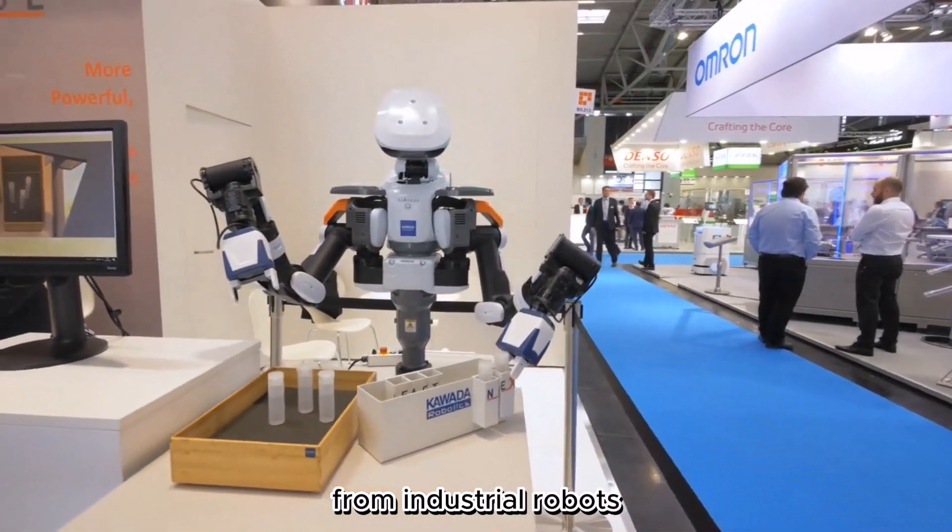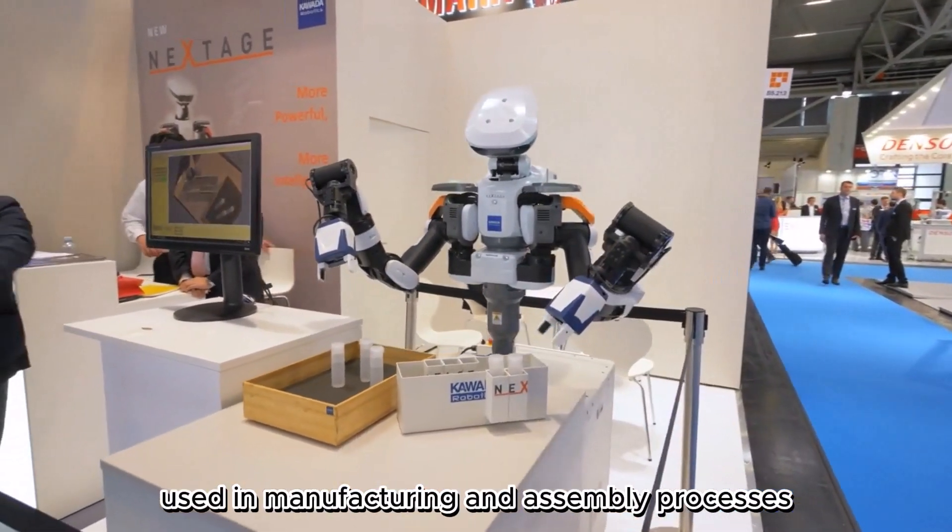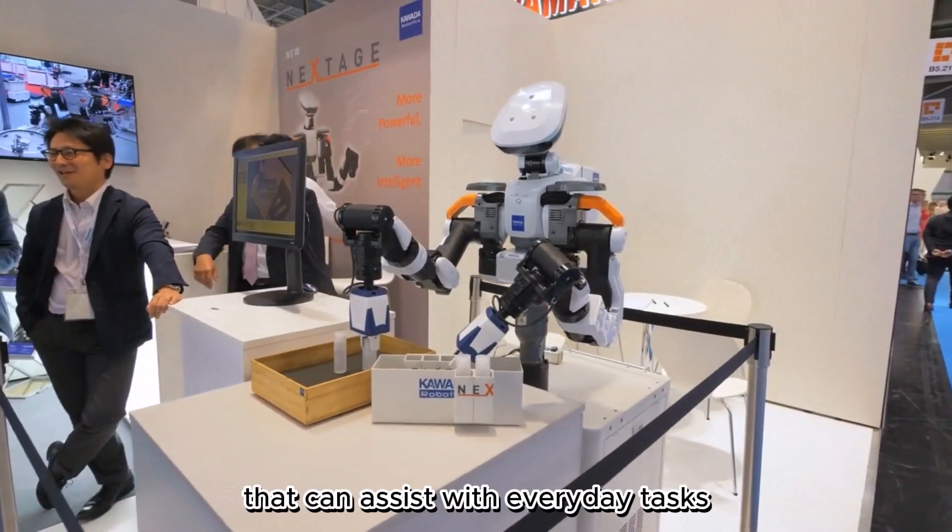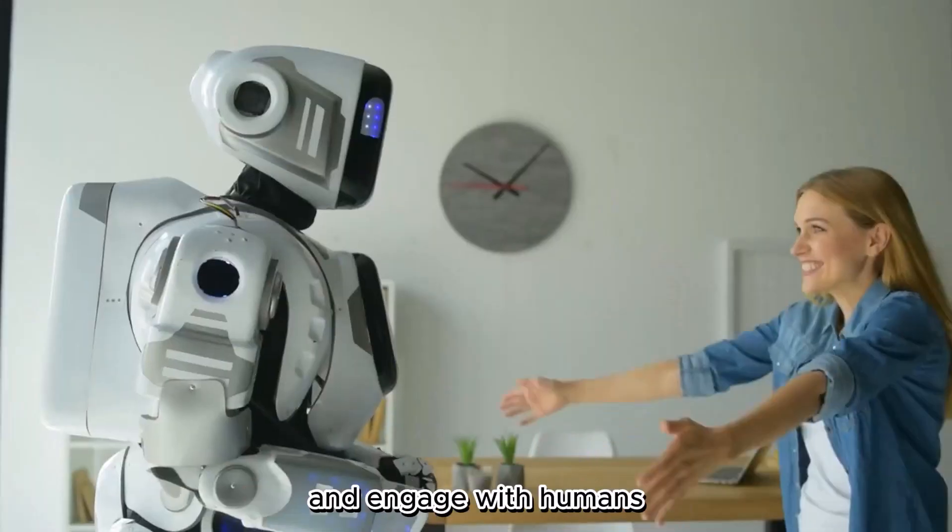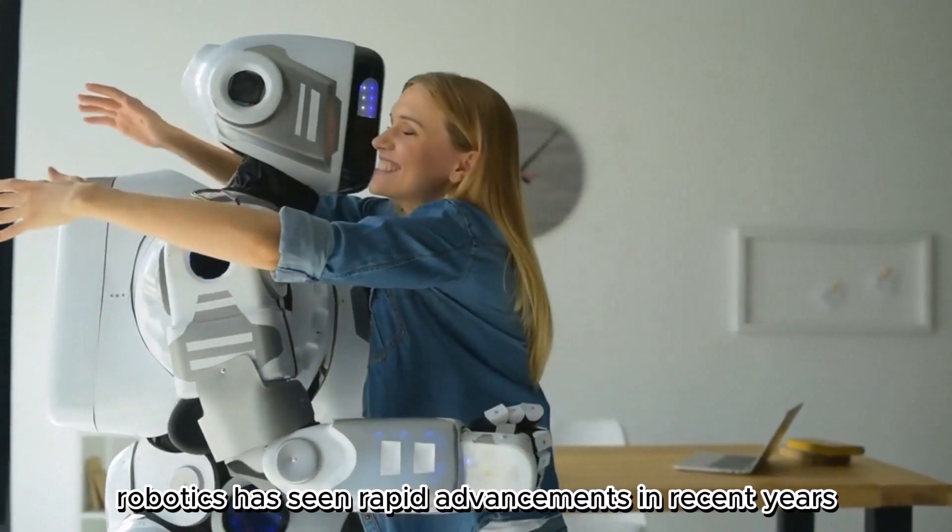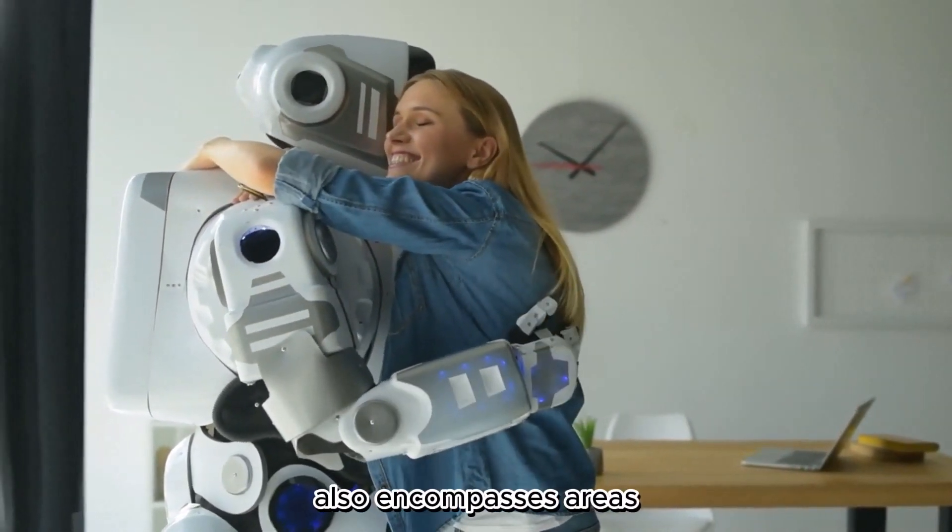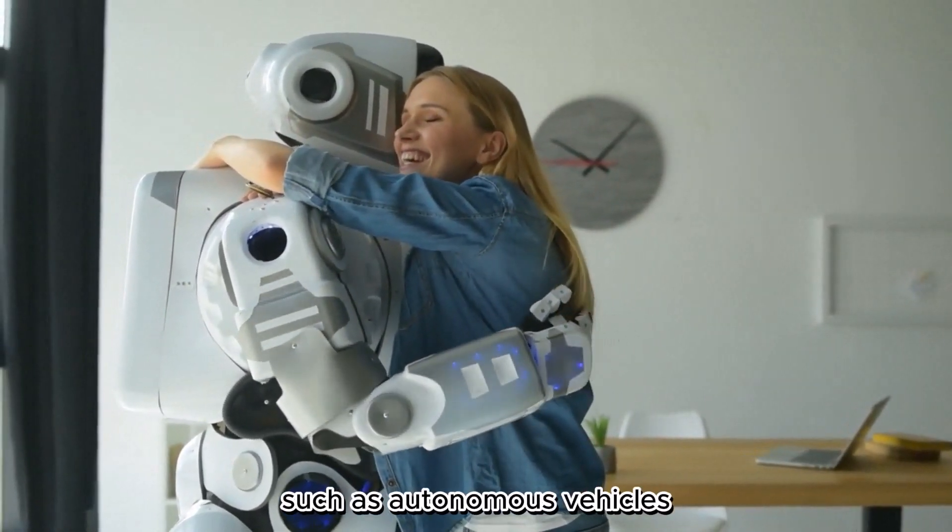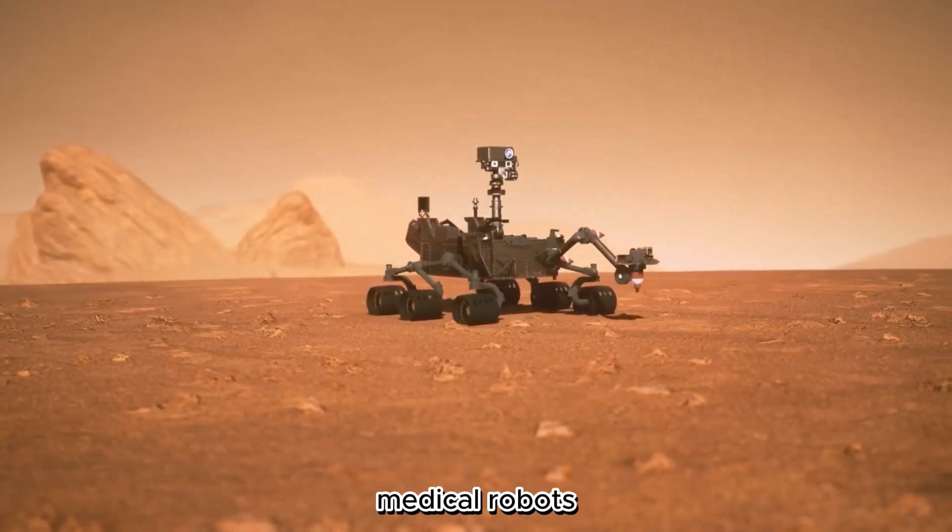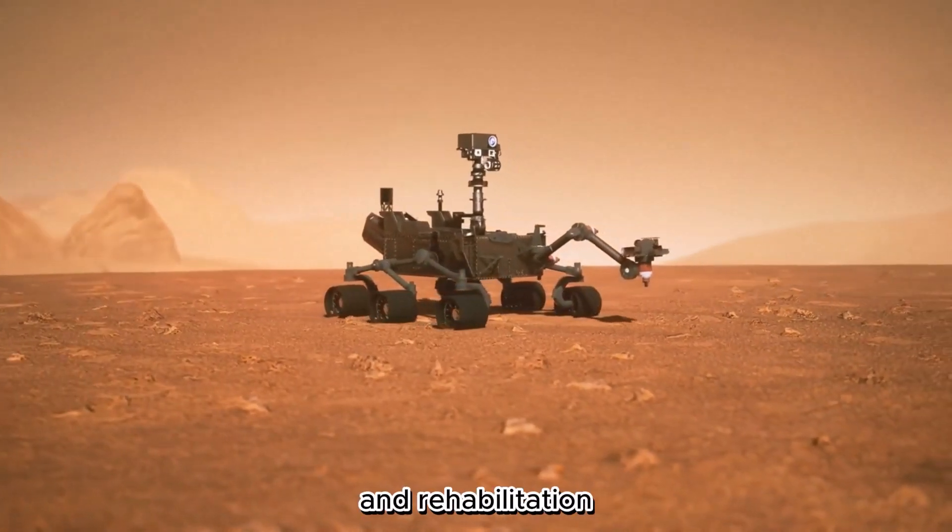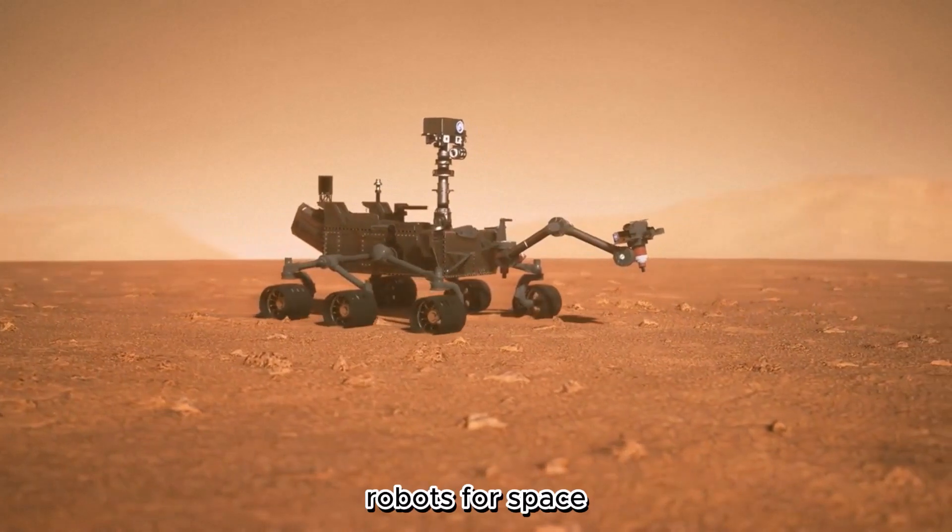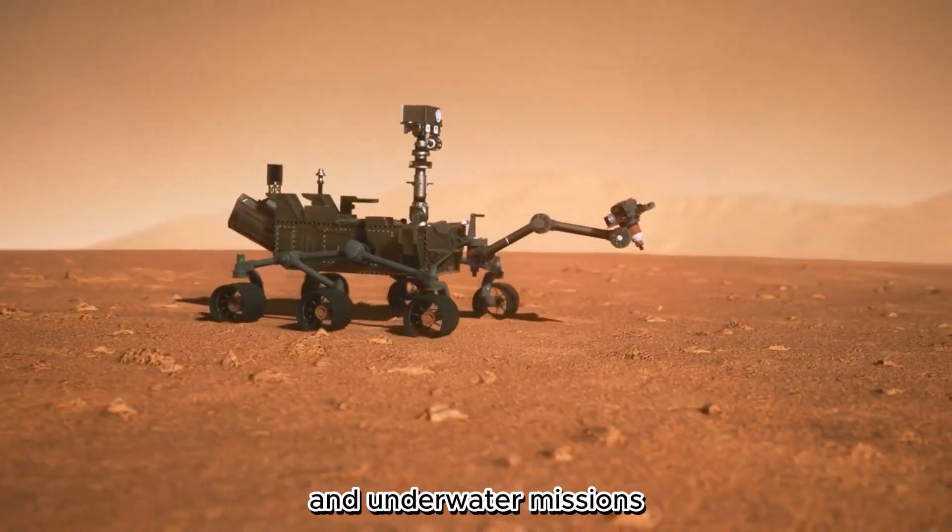From industrial robots used in manufacturing and assembly processes to social robots that can assist with everyday tasks and engage with humans, robotics has seen rapid advancements in recent years. The field of robotics also encompasses areas such as autonomous vehicles, aerial drones, medical robots for surgery and rehabilitation, and exploration robots for space and underwater missions. Number 5.